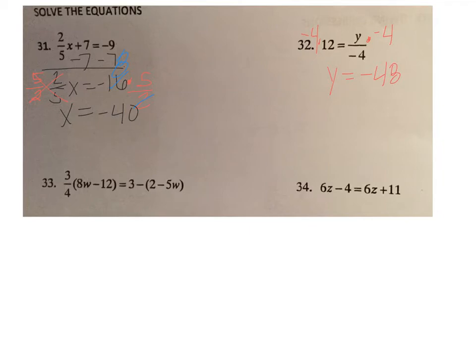Number 33, there's two main things going on here. One, we're asked to distribute this fraction 3/4, and then we have to know the difference between 3 minus the quantity of 2 minus 5w and negative 3 times the quantity of 2 minus 5w. This is a totally different problem if it said negative 3 parentheses 2 minus 5w. In this problem here, you would distribute the negative 3 to both sides, but that's not the situation we have. Here we're going to just distribute the negative sign to both sides.